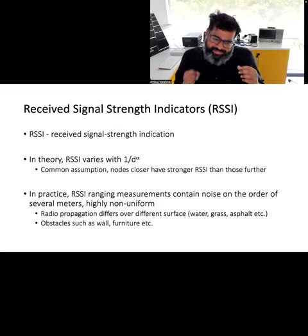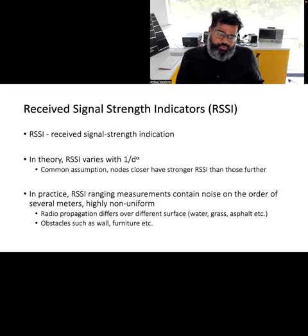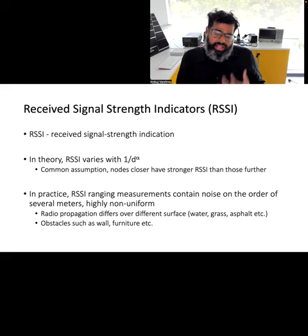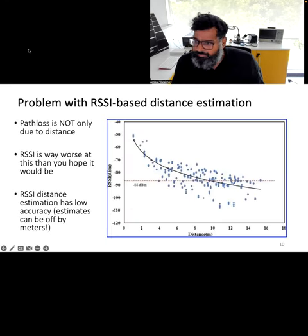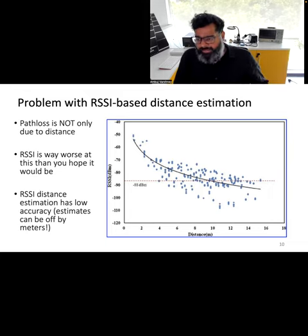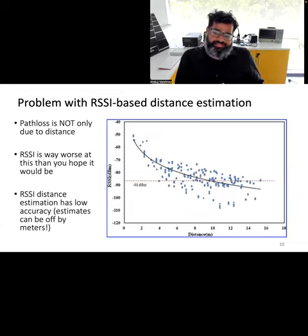However, in reality this is often not the case because of the complex propagation of radio waves in real environments. Consequently, one of the major issues with using RSSI for ranging — estimating distance — is that the noise of RSSI can be on the order of meters, making measurements inaccurate. Path loss does not only occur due to distance, but also many other environmental factors: the wireless signal can be reflected from the environment, or other wireless signals may interfere. Consequently, RSSI is very noisy and can be very far from what you may estimate.